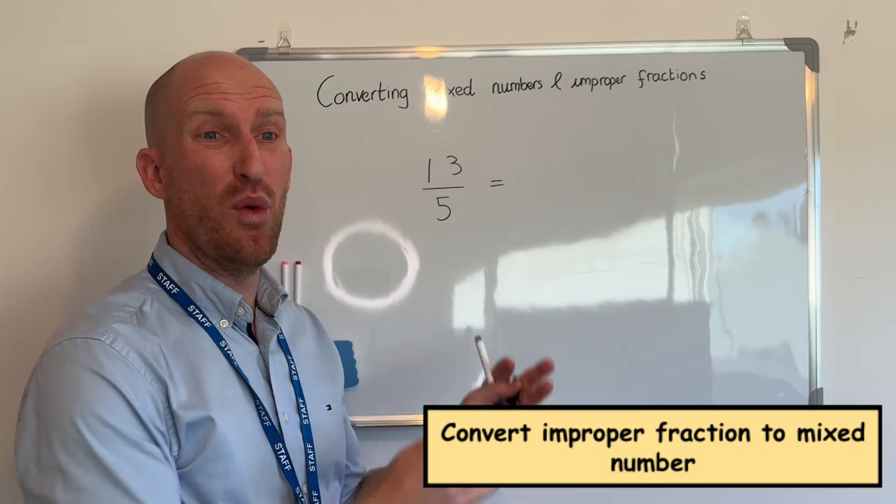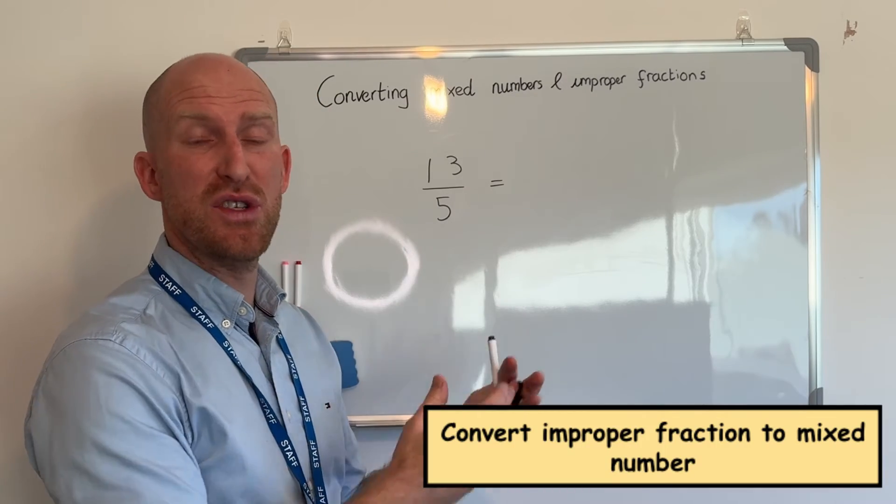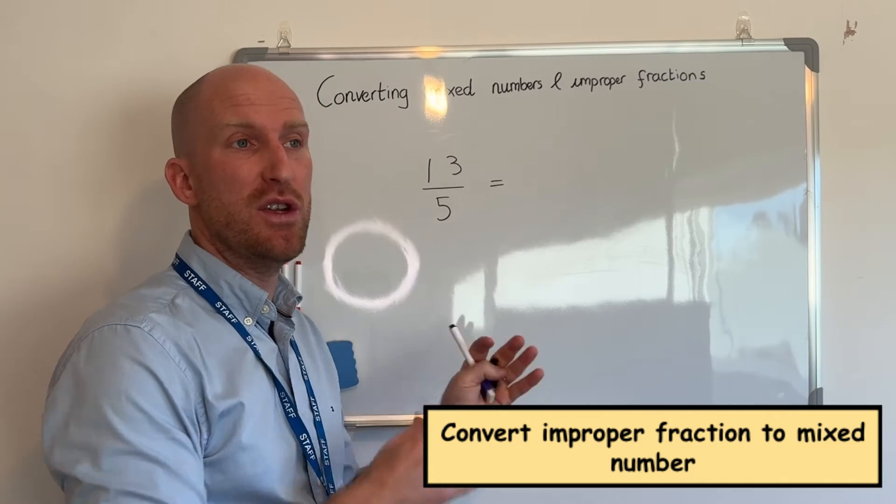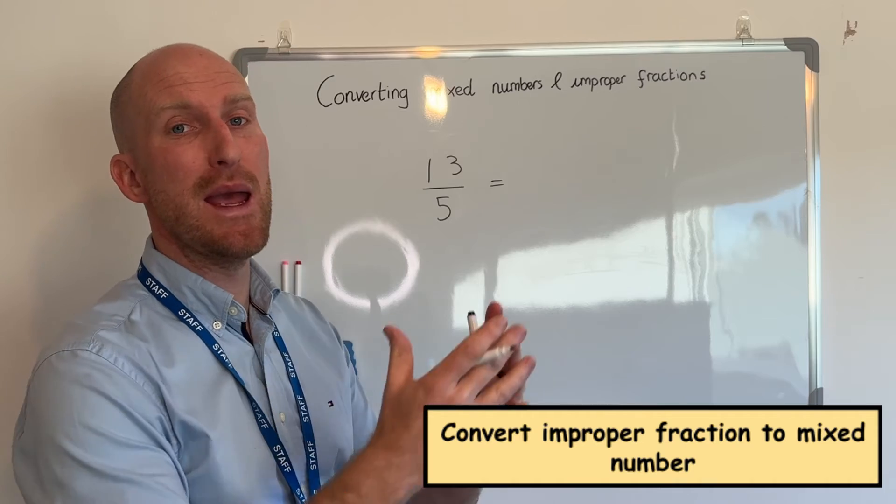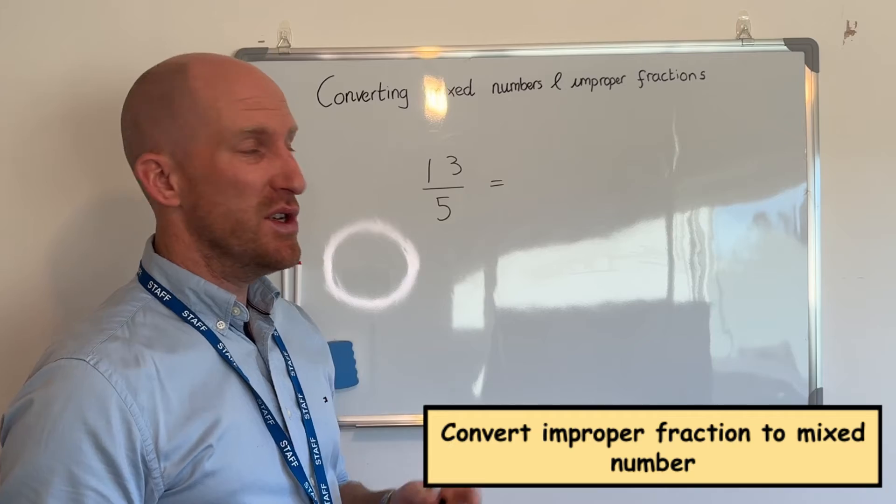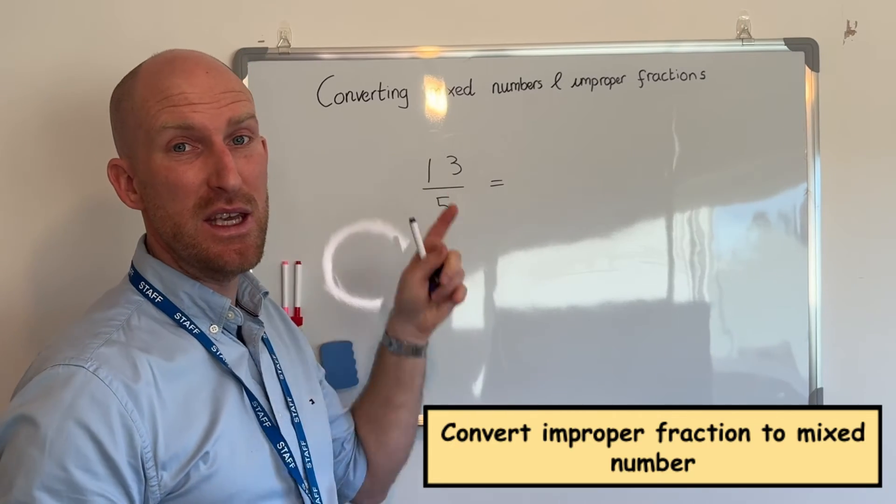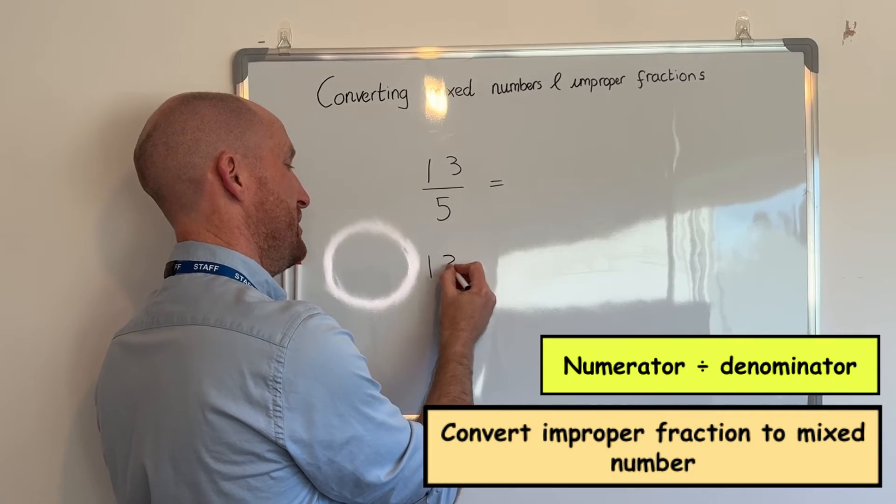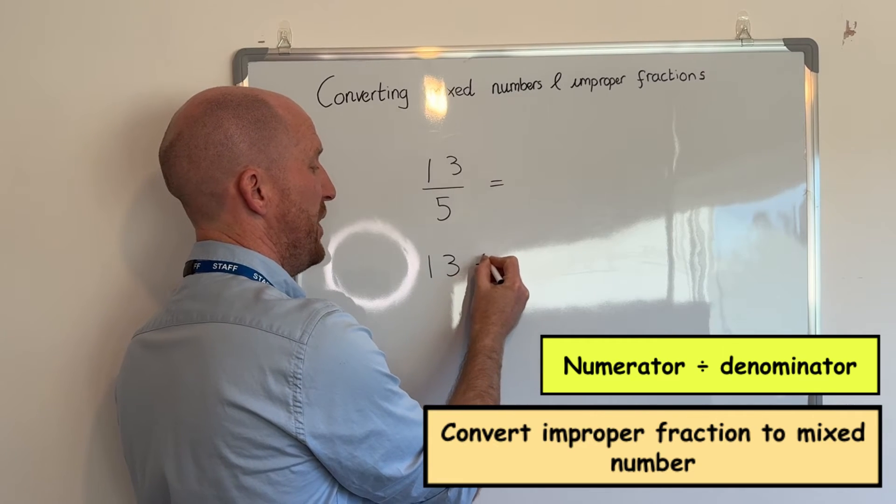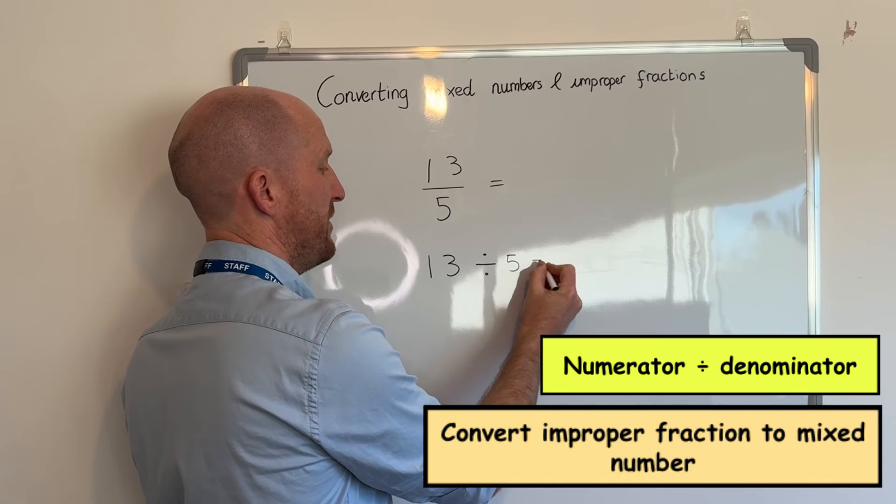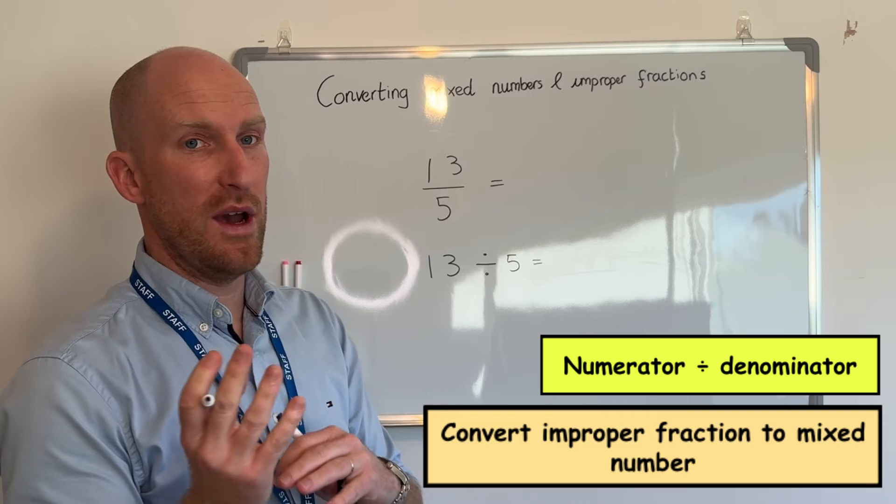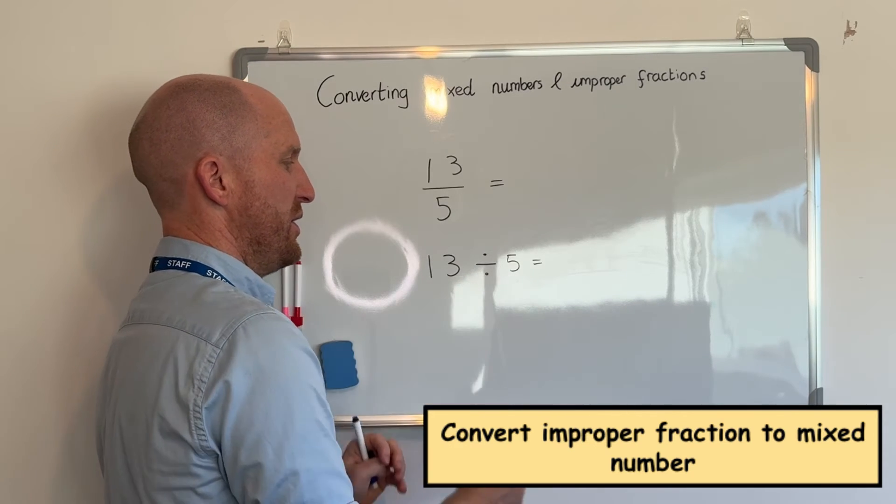Now in our next example we're actually going to do the reverse of what we've already done. We are going to take an improper fraction and we're going to convert it into a mixed number. Now to do this all you need to do is take the numerator which is thirteen and divide it by five.